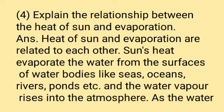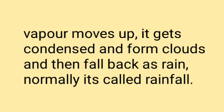Fourth question: Explain the relationship between the heat of the Sun and evaporation. Answer: The heat of the Sun and evaporation are related to each other. The Sun's heat evaporates the water from the surfaces of water bodies like seas, oceans, rivers, and ponds. The water vapor rises into the atmosphere, gets condensed, forms clouds, and then falls back as rain — this is called rainfall.